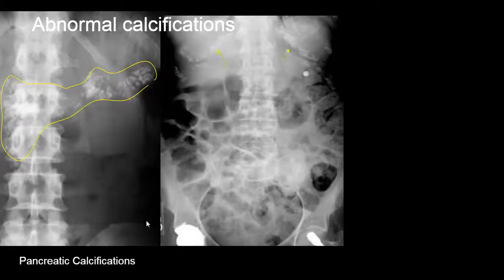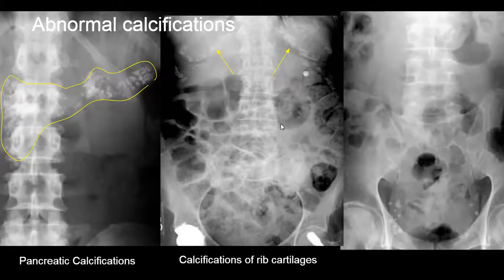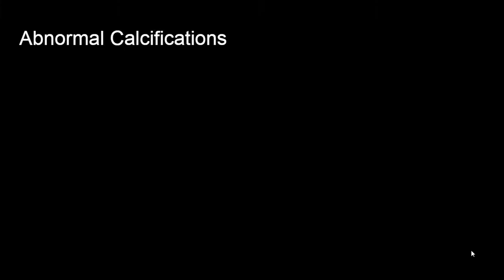Here are some more abnormal calcifications. Along the costochondral cartilage — this is not really abnormal since we see this in normal older patients when the costochondral cartilage calcifies. In the pelvis we see a pattern specific for phleboliths, which are calcifications within veins and occur in normal individuals.